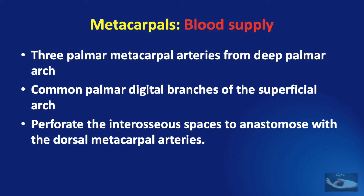The blood supply to the metacarpal bones is through the three palmar metacarpal arteries arising from the deep palmar arch. These communicate with the common palmar digital arteries, branches of the superficial arch, and these arteries perforate the interosseous spaces to anastomose with the dorsal metacarpal arteries.